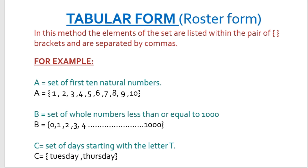The second set: set B is a set of whole numbers less than or equal to 1000. It's obvious that we cannot list all elements from 0 to 1000. So we can list the elements as 0, 1, 2, 3, 4, ... (dots) ... till 1000. The dots show the continuation from 4 up till 1000. Again, in set B in tabular form, all elements are listed within curly brackets and separated by commas.